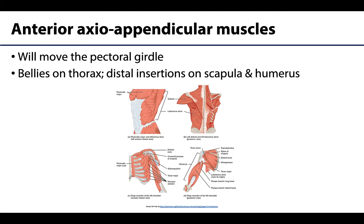Axial appendicular muscles have their muscle bellies on the thorax, meaning a proximal attachment on the thorax, and their distal insertions on either the scapula or the humerus. Depending on the attachment site, these muscles will either move the scapula or the shoulder joint. They can also play a role in moving portions of the thorax via a reverse action motion.